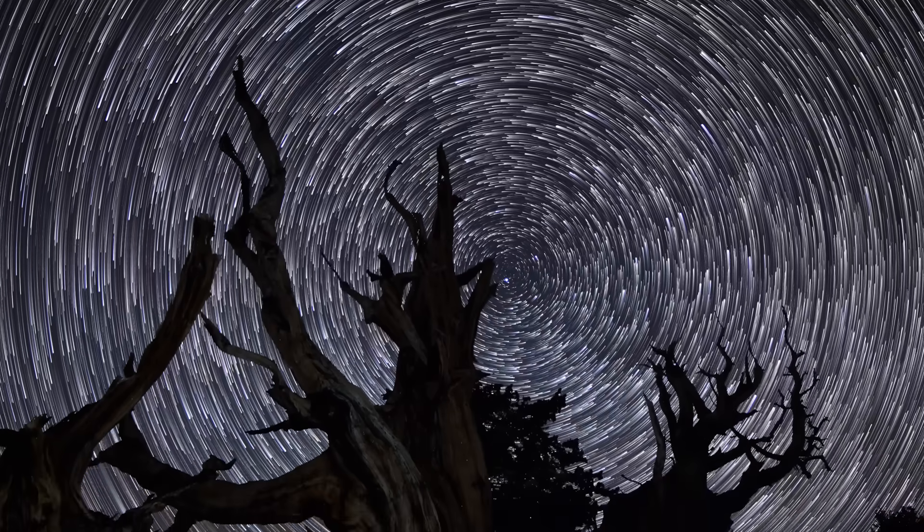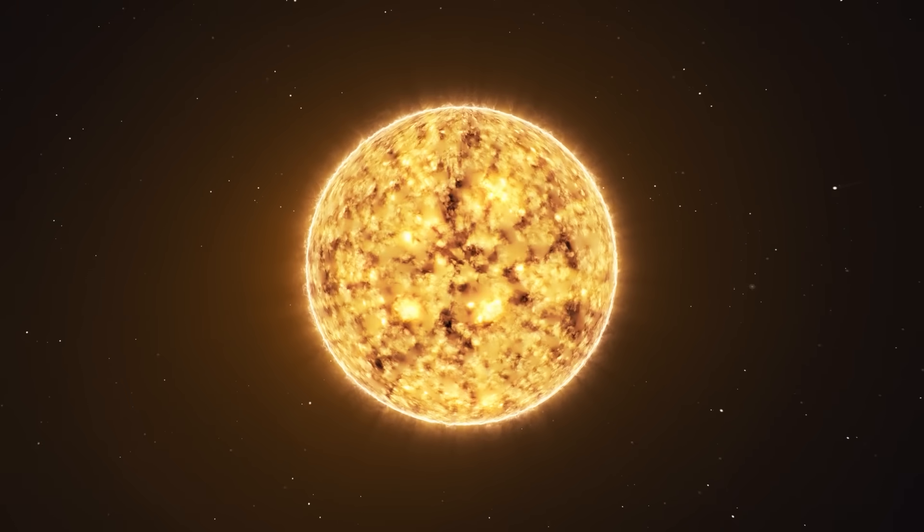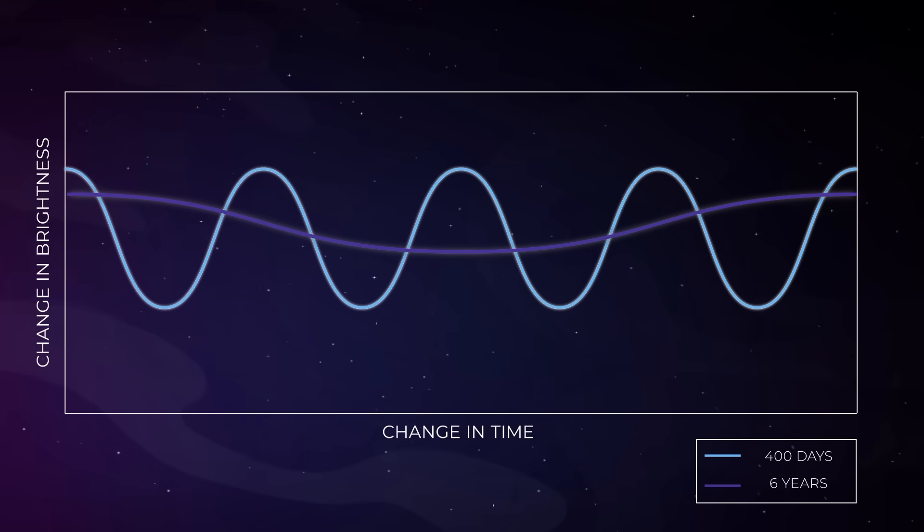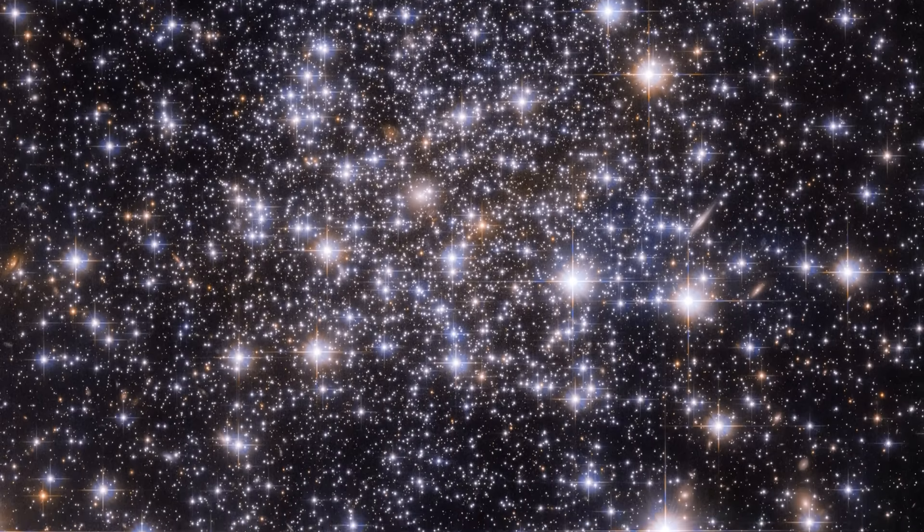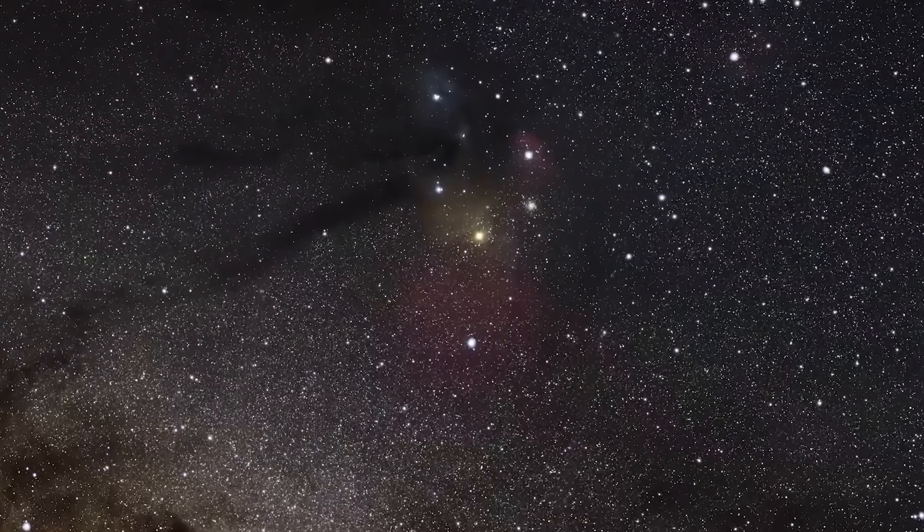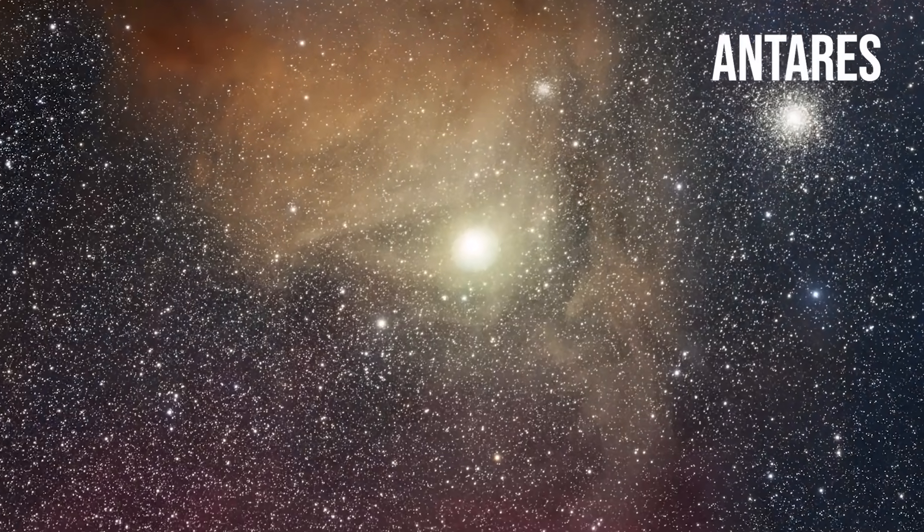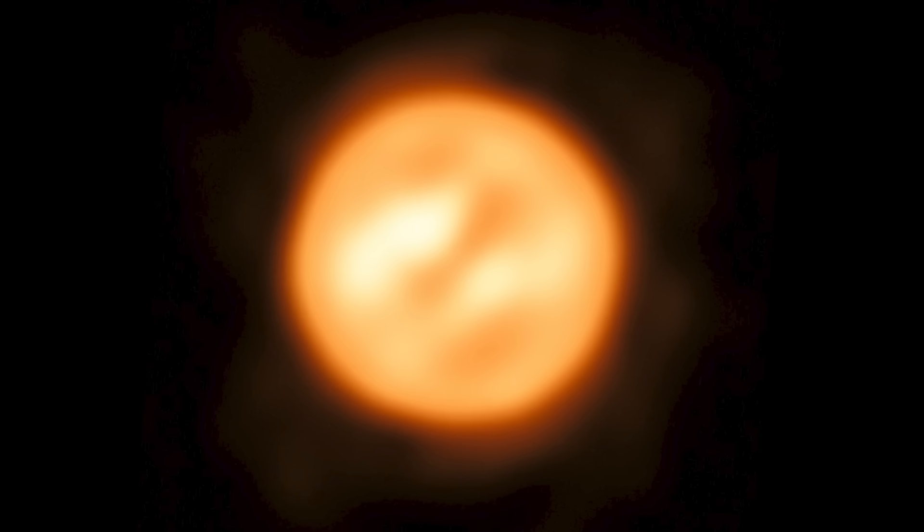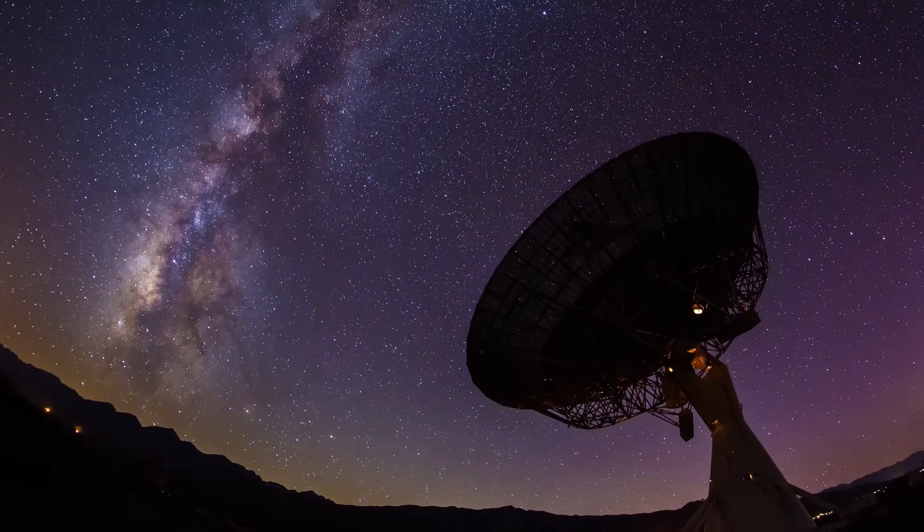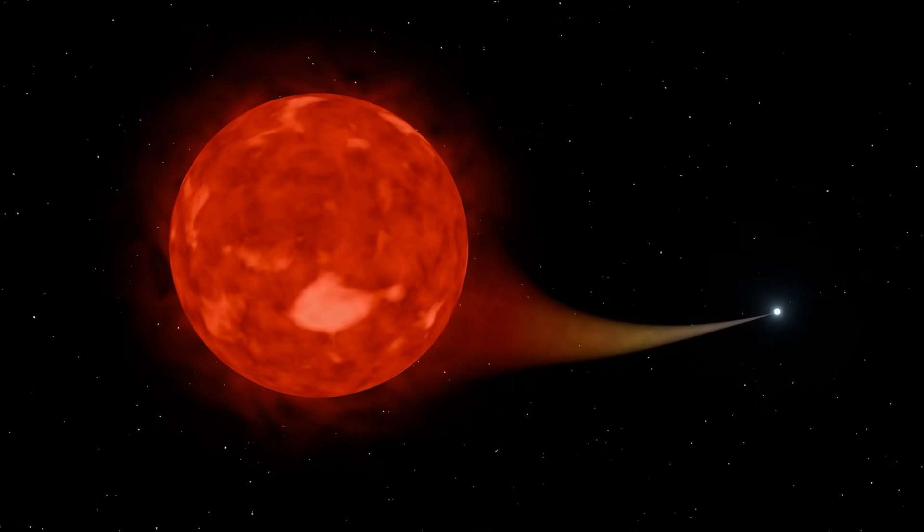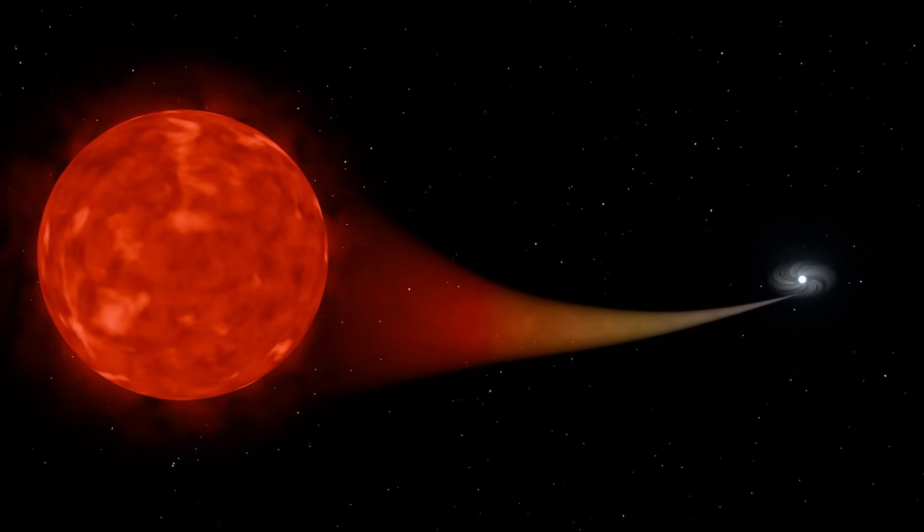Beyond solving long-standing mysteries about Betelgeuse, this discovery opens a new chapter in our understanding of red supergiants. If Betelgeuse's strange behavior, its brightness cycles, its motion, can be explained by the influence of a hidden companion, it raises a much bigger question: could other red supergiants be hiding partners too? Take Antares, for example, another massive red supergiant in the constellation Scorpius. Like Betelgeuse, Antares shows long-term variations in brightness that scientists have struggled to explain. With Betelgeuse now emerging as a likely binary system, Antares may become a prime candidate in the search for unseen companions. This discovery could mark a turning point, shifting the way astronomers study aging stars, and prompting a fresh look at how stellar companions might be quietly shaping the lives and deaths of giants across our galaxy.